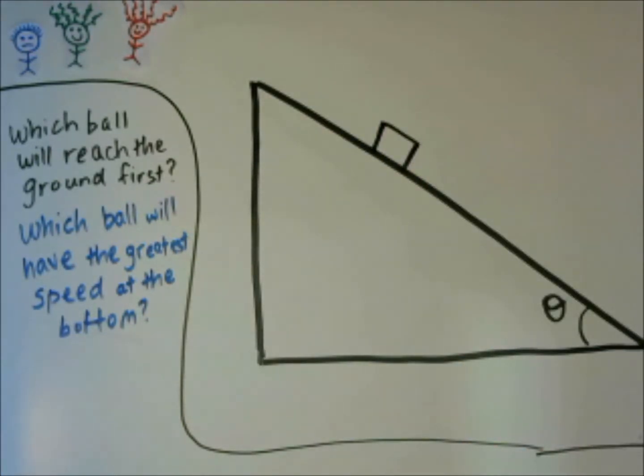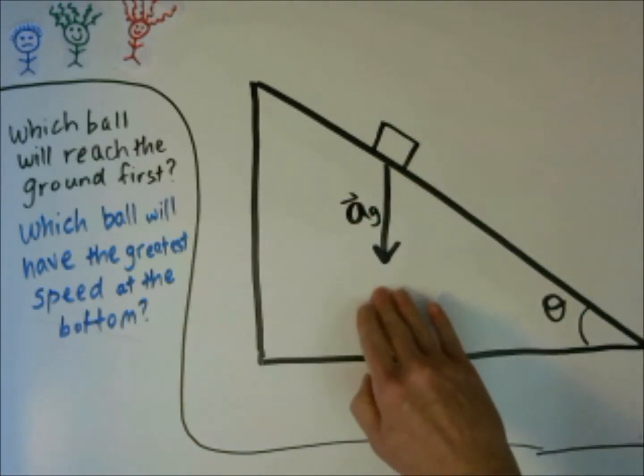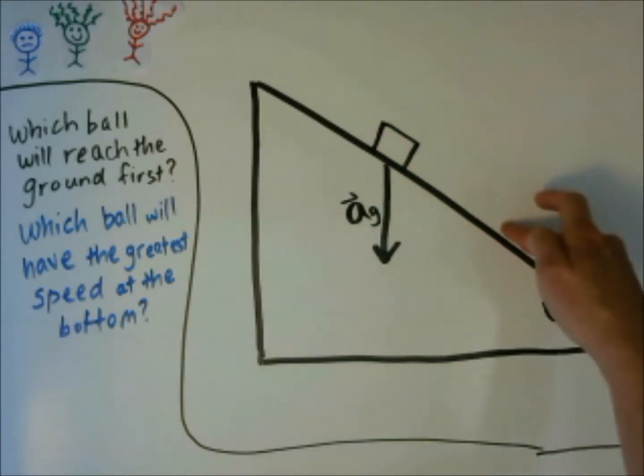Let's consider an object on an inclined plane. We're going to actually ignore friction, so it doesn't matter if it's a ball or a box. What kind of acceleration does this ball feel? It feels the acceleration of gravity going straight down, but that acceleration does not all come out going down the inclined plane.